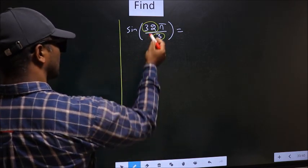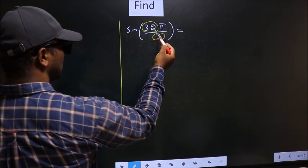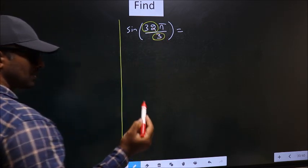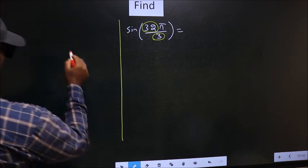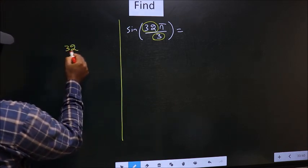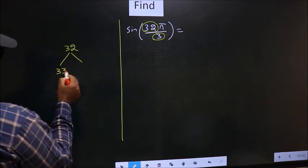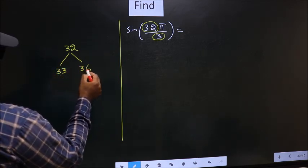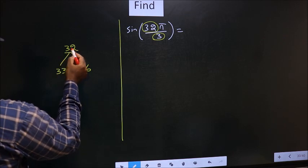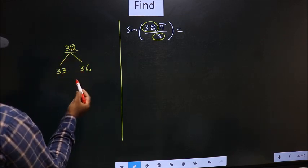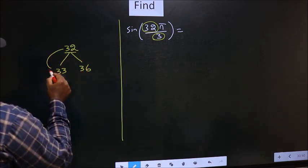Now you should look, 32 is close to which multiple of 3? What I mean is 32, and here you write multiples of 3, that is 33 and 36. Now 32 is close to which multiple? It is close to 33.